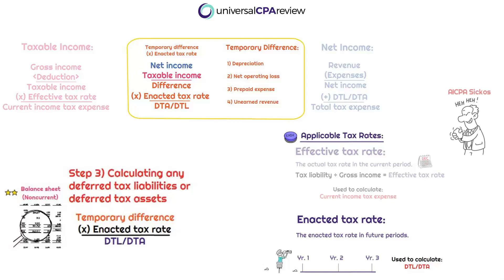On the exam, while they will not hesitate to use the complexities within these tax rates to throw you for a loop, they will also very frequently go easy on you within the fact pattern. They might imply that the current effective tax rate and the future enacted tax rate are the same. The most important takeaway from this mental map isn't the differences in rates — it's understanding how the deferred tax liability and deferred tax asset are calculated and where they are presented in the financial statements. The resulting DTA and DTL go straight to the non-current portion of the balance sheet.